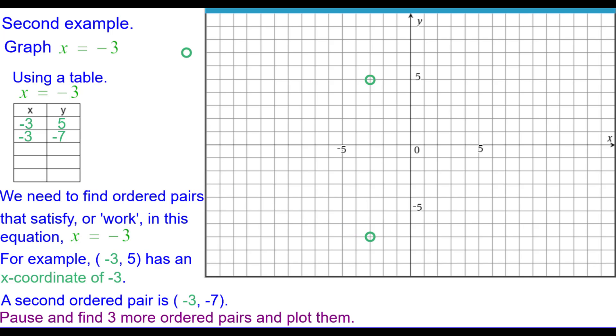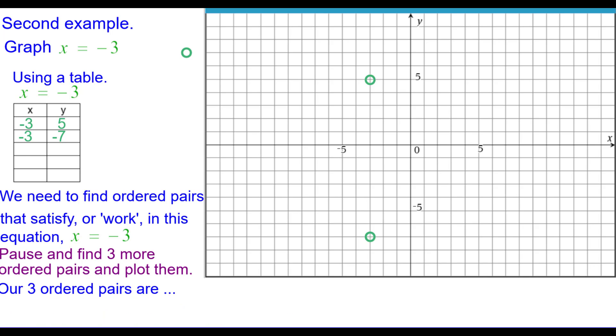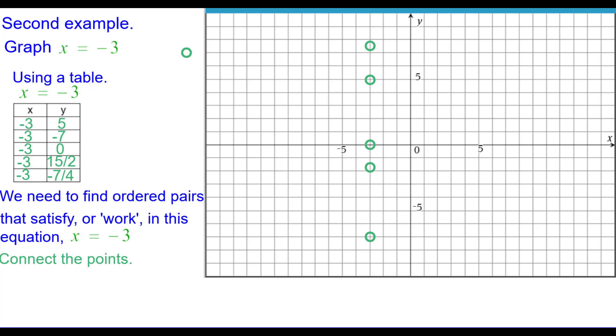Pause and find three more ordered pairs and plot those. Press resume when you're ready. Our three ordered pairs are negative 3 comma 0, negative 3 comma 7 and a half or 15 halves, and negative 3 comma negative 7 fourths or negative 1 and 3 fourths. Connect the points.